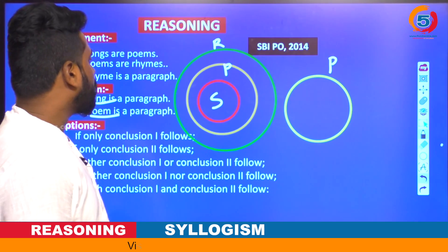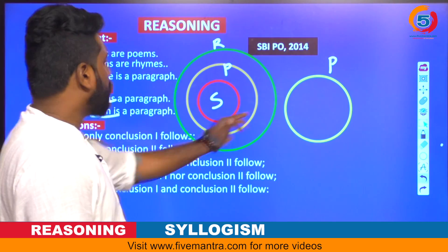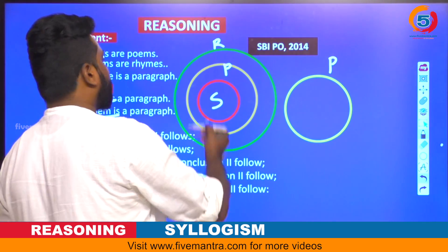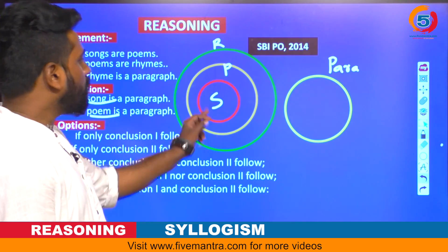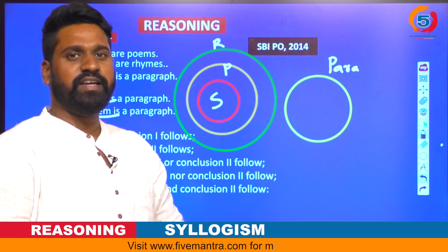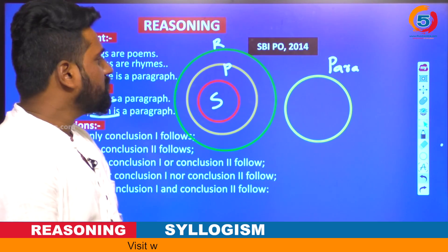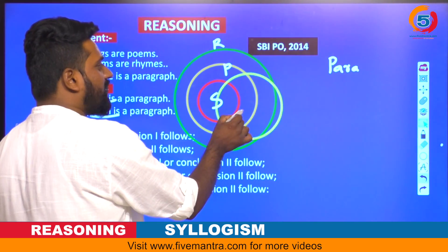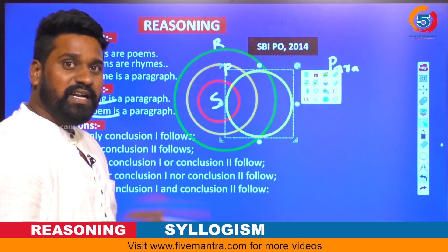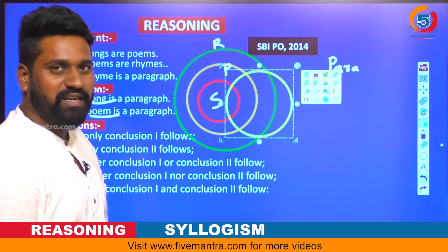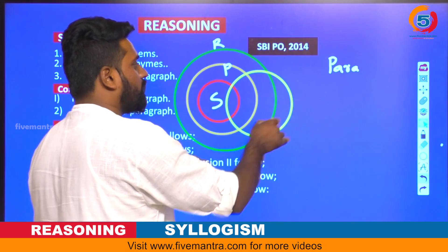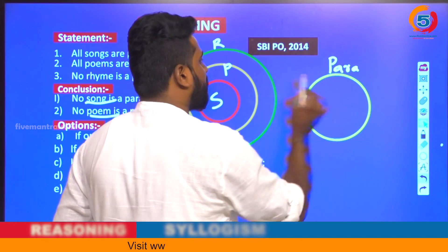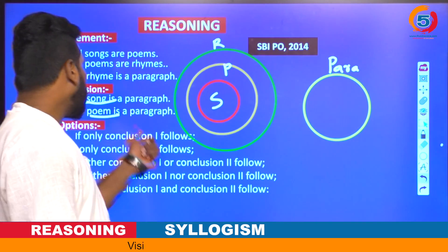All songs are poems, all poems are rhymes, and no rhyme is a paragraph. Coming to the first conclusion: no song is a paragraph — is this a definite conclusion or a possibility? If you try to intersect the paragraph circle with songs, it would also intersect with rhymes, disturbing the meaning of 'no rhyme is a paragraph.' So this is the only correct diagram, meaning conclusion one — no song is a paragraph — is exactly correct.